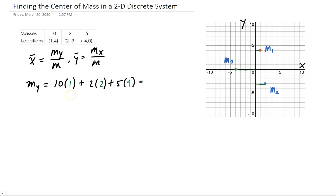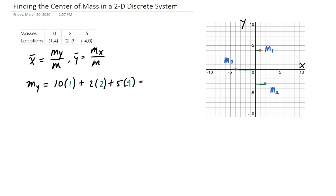So we get 10 plus 4 minus 20 — it's actually negative 4 — so that gives us a total of negative 6. The third mass is 5, located 4 units to the left of the origin. So that's the moment about y.